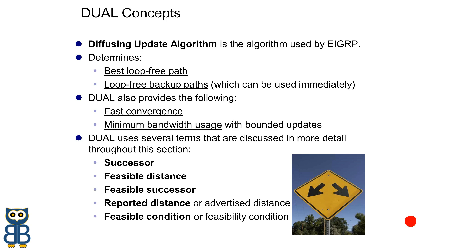EIGRP avoids recalculation whenever possible because recalculation is processor intensive. EIGRP avoids recalculation by maintaining a list of backup routes that DUAL has previously found to be loop-free. If the primary route in the routing table is not working, the best backup route is straight away added to the routing table.